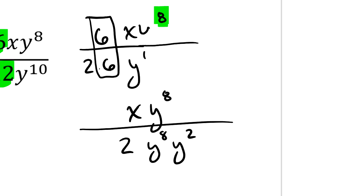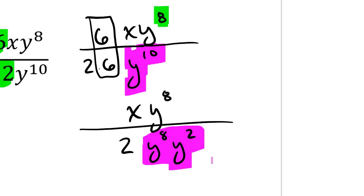Again, I've got an xy to the 8th and over y to the 10th. So what I'm doing is I'm rewriting this y to the 10th. I'm rewriting it as y to the 8th, y to the 2nd. Clearly, those two things I've highlighted in purple are the same. So I'm allowed to make that change.